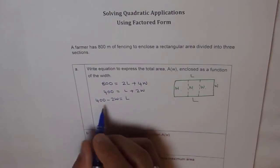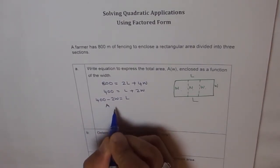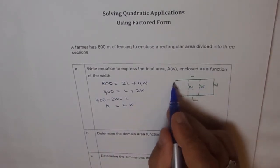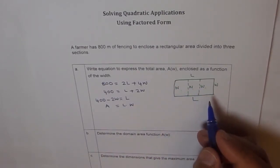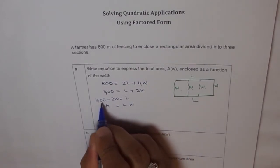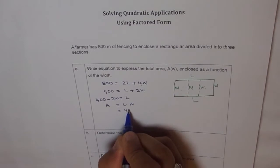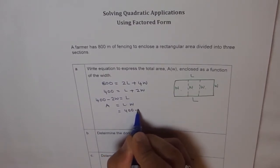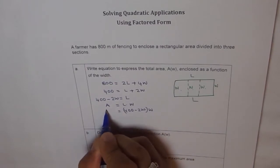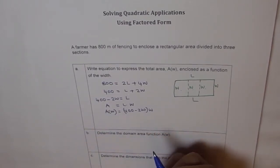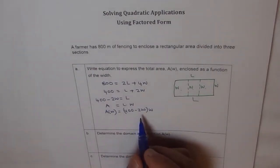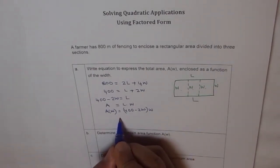Now, length is L. What is the area? Area is equal to length times width of the big enclosure, all three combined together. Now, here if we write length in terms of W, it becomes 400 minus 2W times W equals to area in terms of W. So we get our function in terms of W.